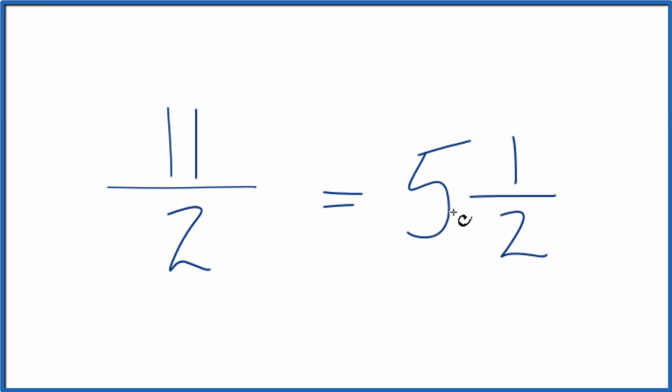You can check that. 5 times 2 is 10 plus 1. That's the 11. And then the 2, we just bring that across.